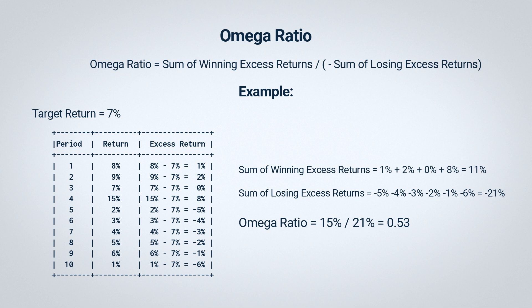An Omega Ratio less than 1 means that the asset or portfolio has performed poorly relative to the target and has more downside risk than upside potential. A table of excess returns can tell you how much an investment has earned or lost compared to a target over individual periods. However, the Omega Ratio looks at the bigger picture — it shows you not only the potential gains or losses against a target return, but also the likelihood of those outcomes. For instance, two investments may have the same average excess return, but one may have a higher Omega Ratio when there's a lower chance of losses and a higher chance of gains. In such cases, that investment would be more attractive, all other things being equal.